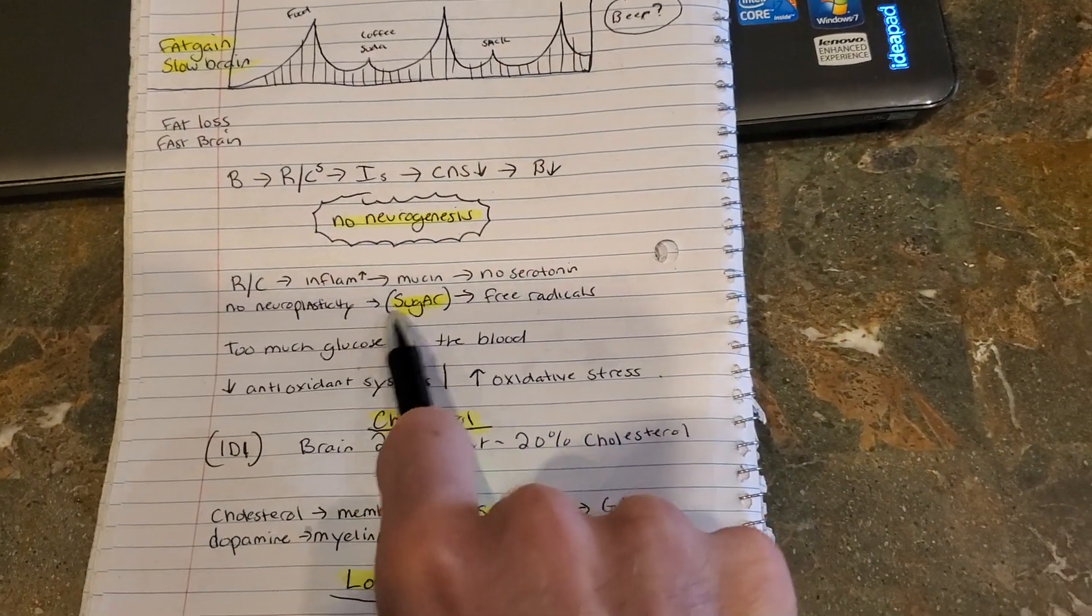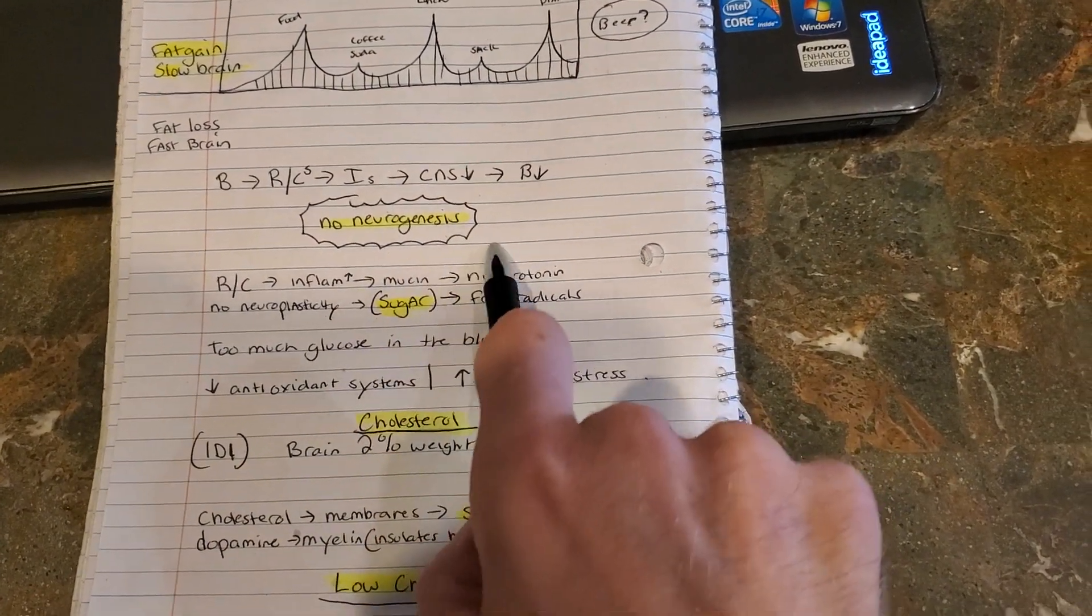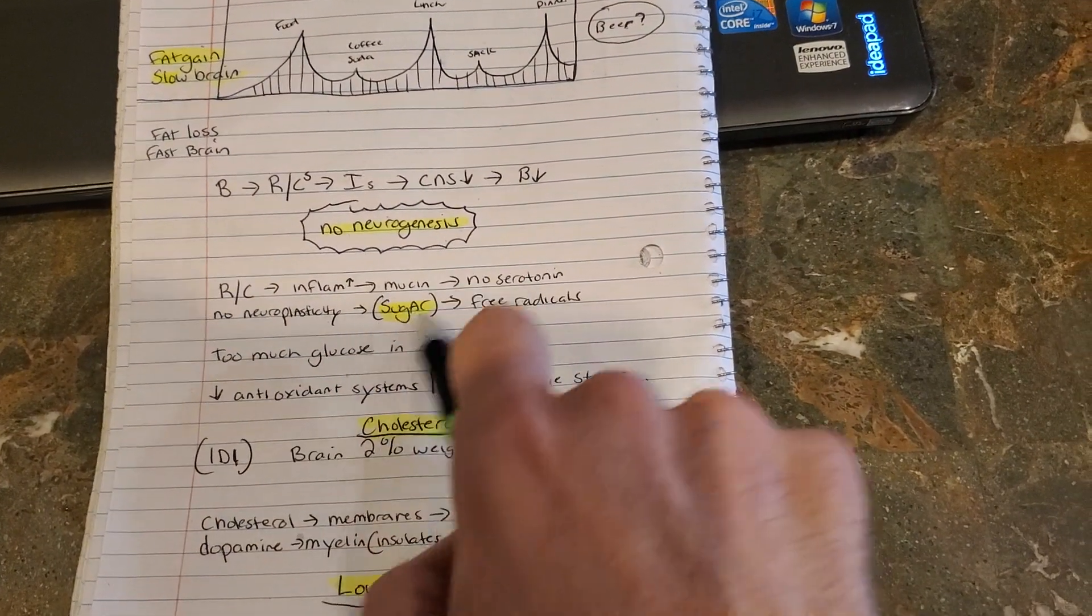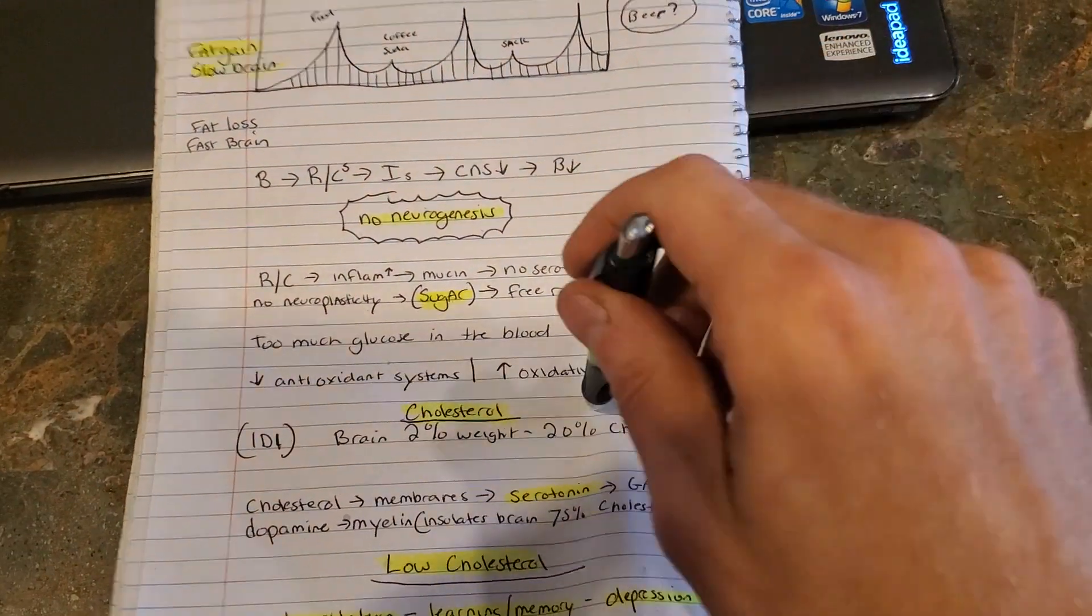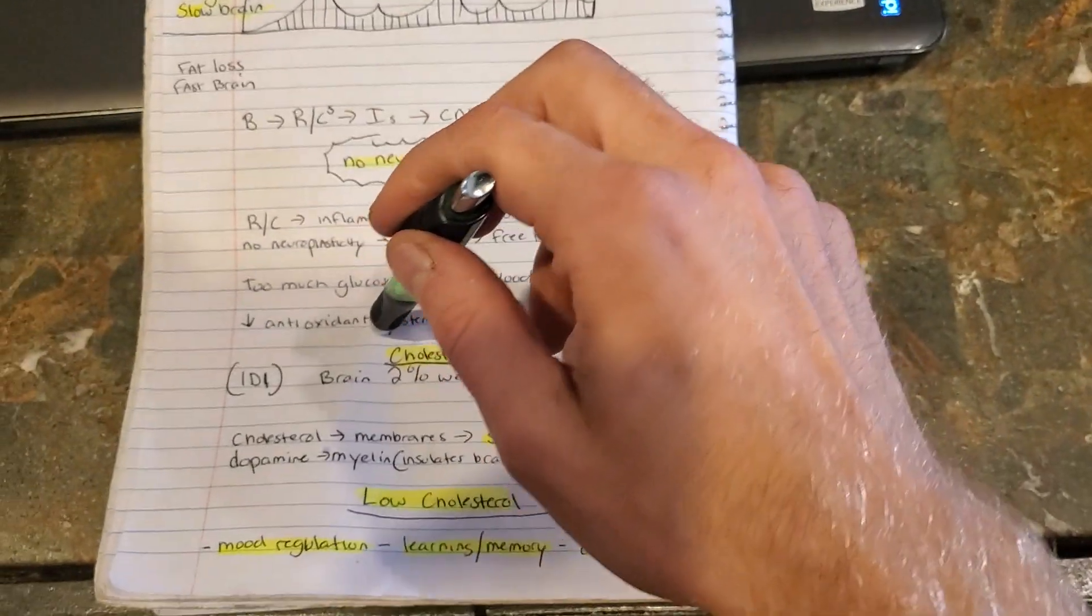Refined carbohydrates, inflammatory. They're very bad for your mucin. Serotonin goes down as well. No neuroplasticity, sugars, free radicals, a lot of, too much glucose in your blood, oxidative stress. Your antioxidant systems go down.